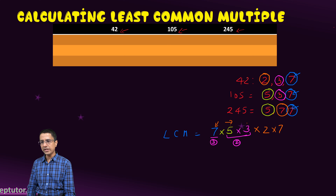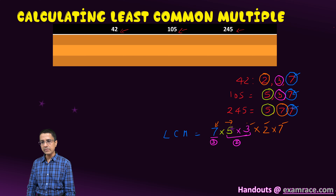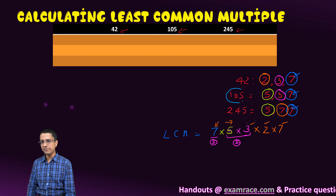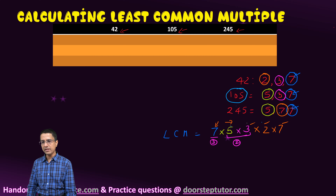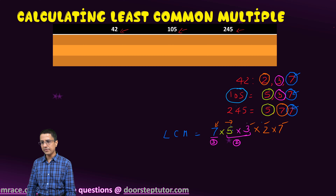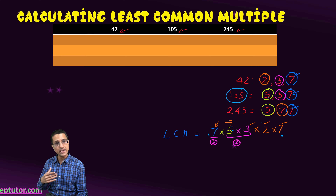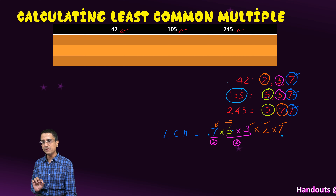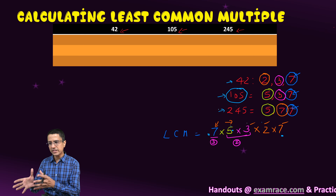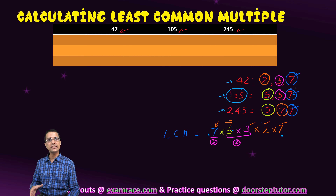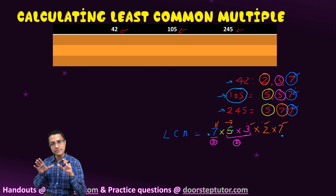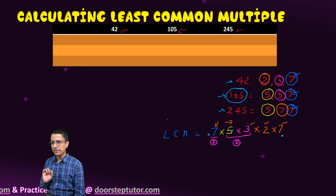For example, if you consider 42, all its factors — 2, 3, 7 — are present in our LCM. Then if you consider 105, all its factors 5, 3 and 7 are also present. Similarly for 245 — 5, 7 and 7 are present. So ultimately this LCM would be divisible by each of these numbers, which is correct, because that is the least common multiple — it is a multiple of all three numbers and must be divisible by all three.